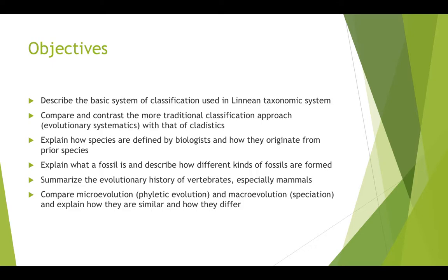Our objectives are to describe the basic system of classification using the Linnaean taxonomic system, to compare and contrast evolutionary systematics with cladistics, to explain how species are defined by biologists and how they originate from prior species, to explain what a fossil is and describe how different kinds of fossils are formed, to summarize the evolutionary history of vertebrates focusing specifically on mammals — stopping just short of primates, and to compare microevolution to macroevolution and explain how they are similar and how they differ.